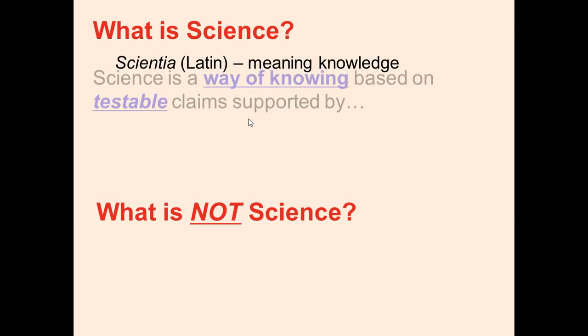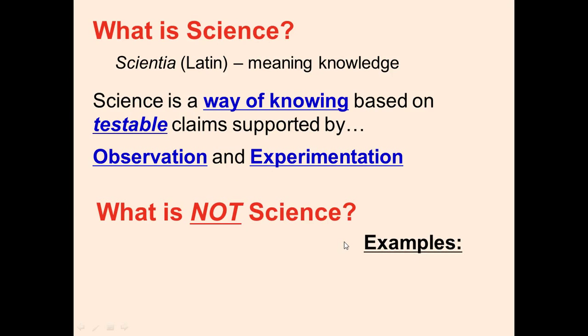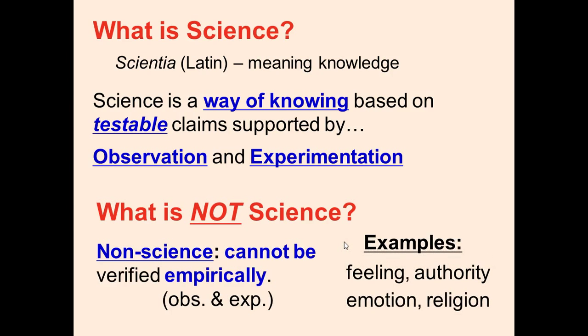Well, science is a way of knowing based off of testable claims supported by experiments and observations. That's important because science has to be proven, and what is not science cannot be proven empirically. Examples are religion, feeling, authority, and emotion, because you can't prove those with observations or experiments.